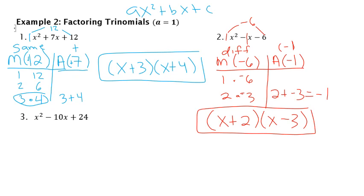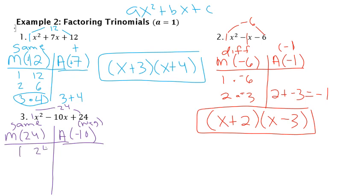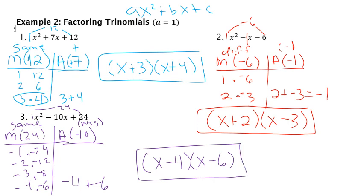And then finally, for the last one, same thing. I'm looking for numbers that multiply to 24, but add to negative 10. And so if they multiply to 24, they're going to be the same sign, because it's positive. And in this case, they're both going to be negative, because it's a negative 10. So if I list it out, 1 and 24, 2 and 12, 3 and 8, 4 and 6, I know they're both all going to be negative, because it has to multiply to give me a positive, but add to a negative. And I'm actually going to use negative 4 and negative 6. So I'd have x minus 4, x minus 6. And that would be my final answer in factored form.